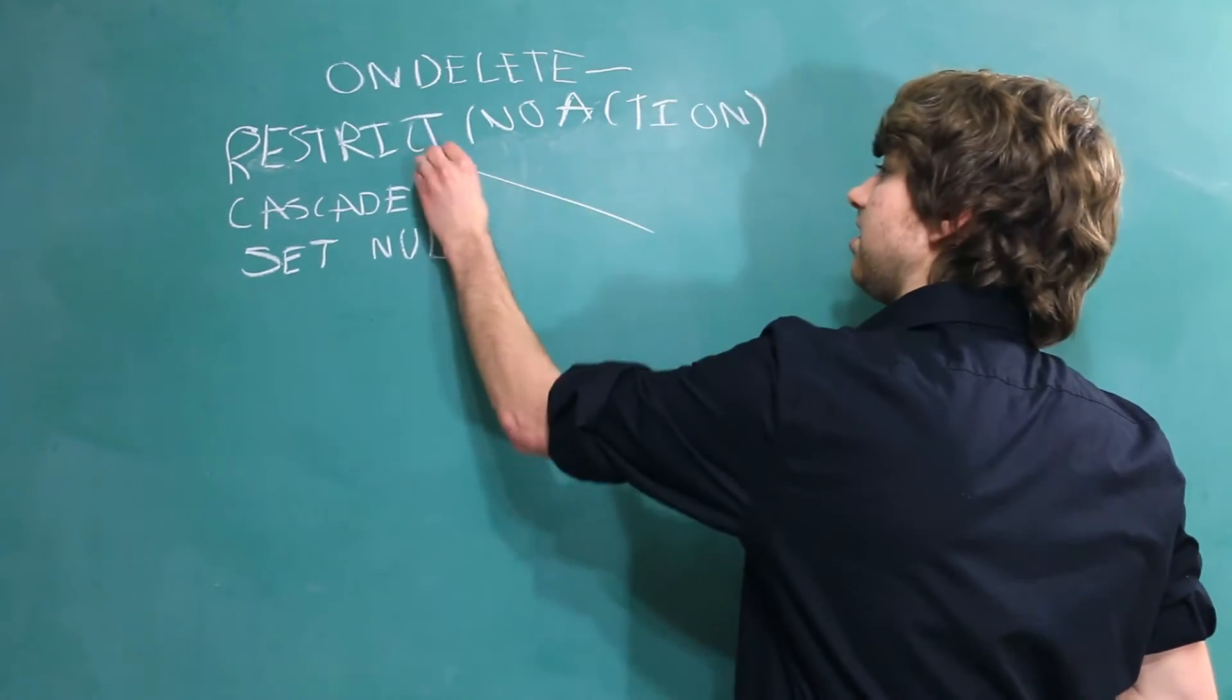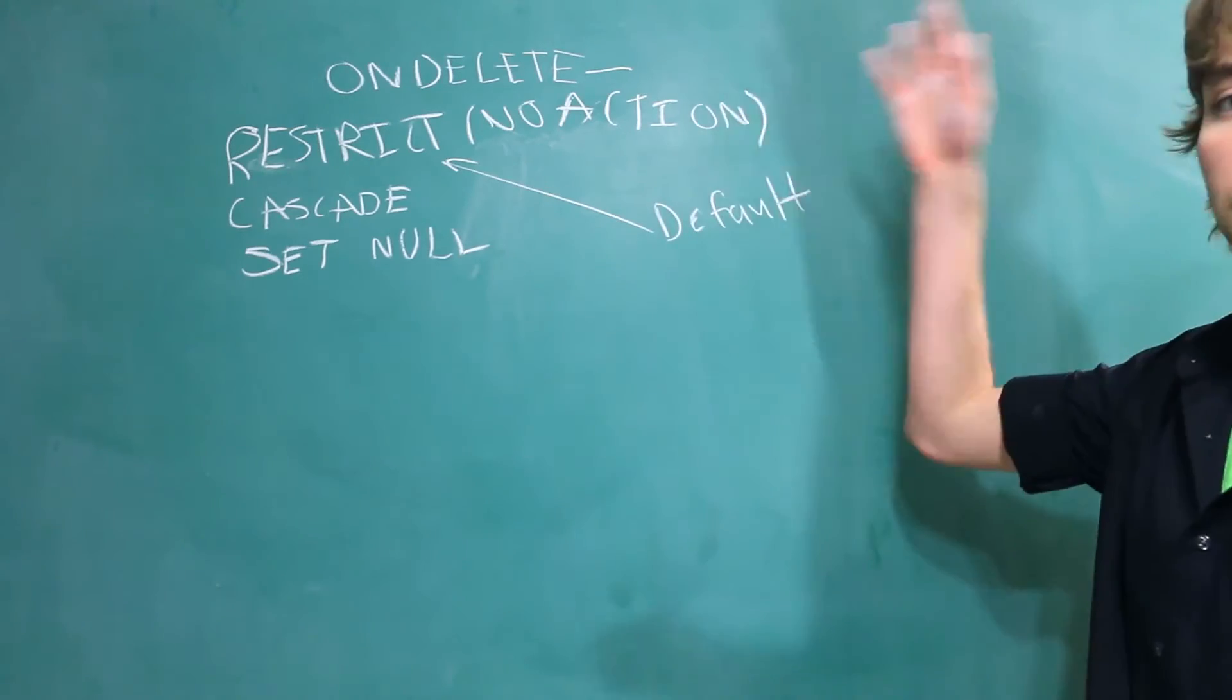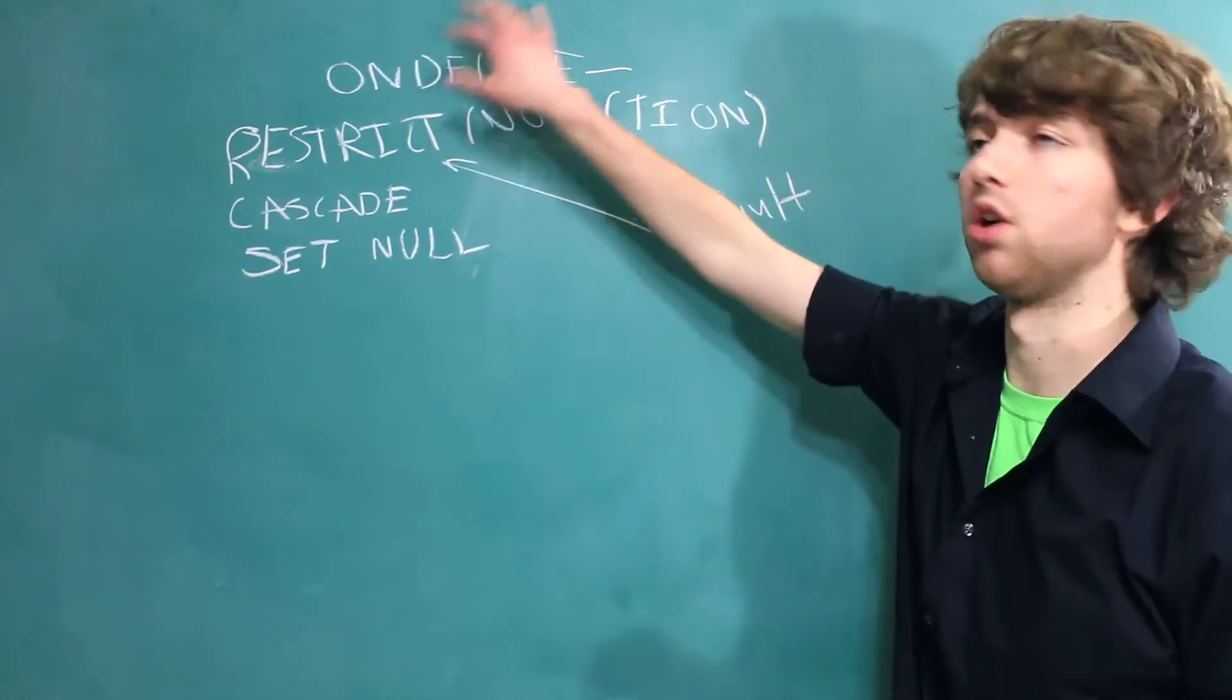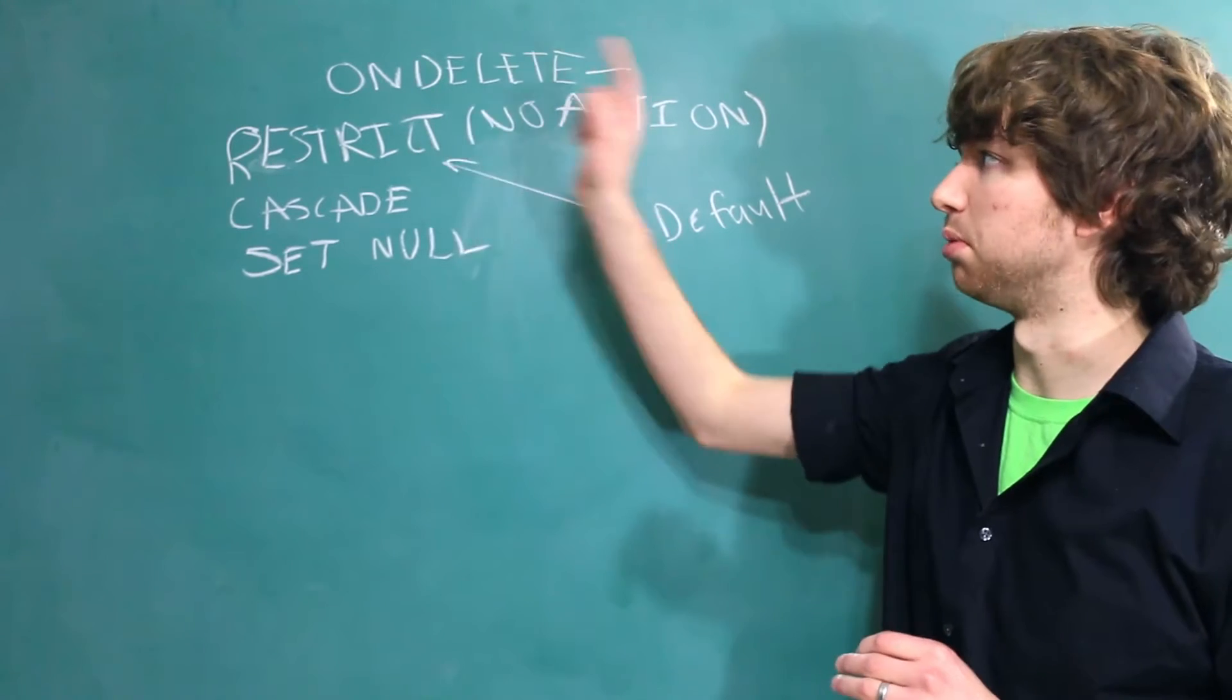So Restrict, that's the default. So if you just make a foreign key and you don't say anything, like you don't put onDelete something, the one that's going to be applied is Restrict.